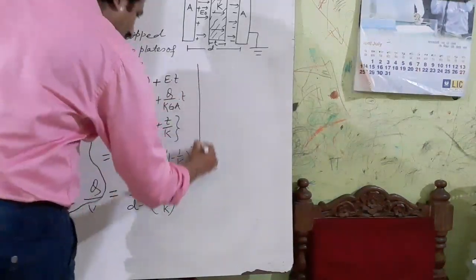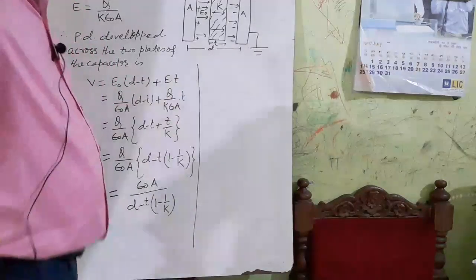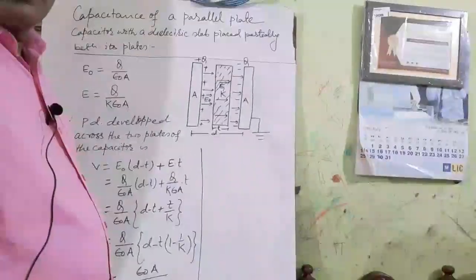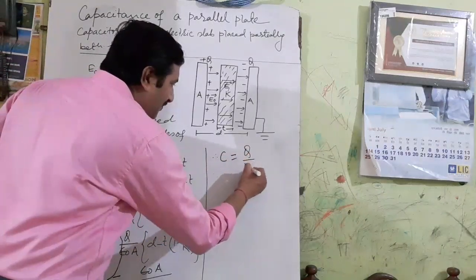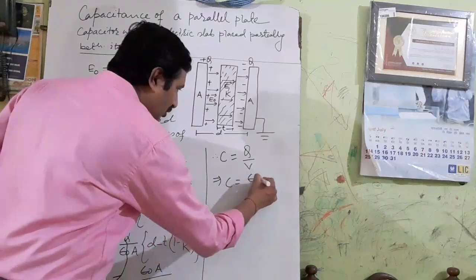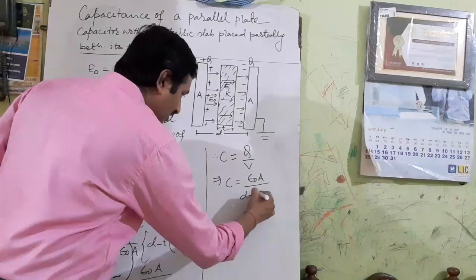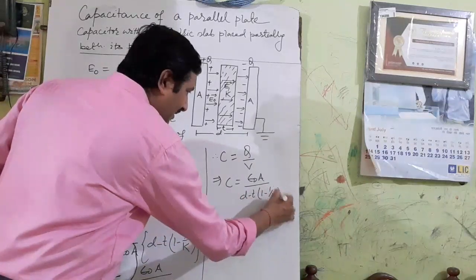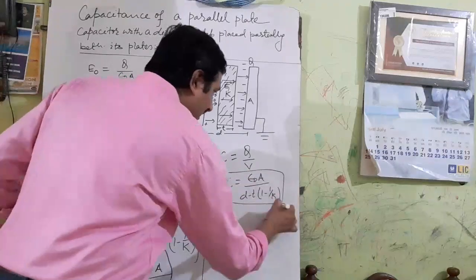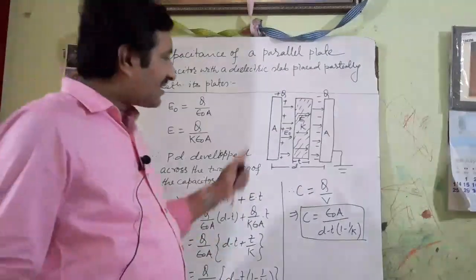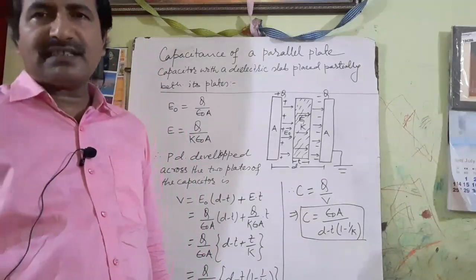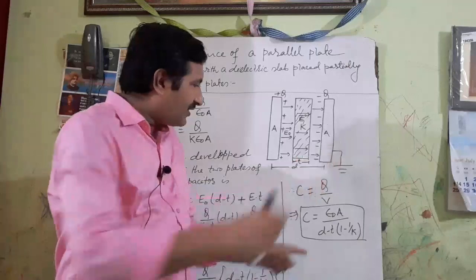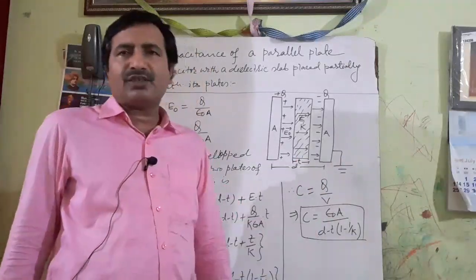Therefore, the capacitance of the capacitor is C = Q/V, which equals C = ε₀A / [D − T(1 − 1/K)]. This is the expression for the capacitance of a parallel plate capacitor partially filled with a dielectric slab between its two plates.